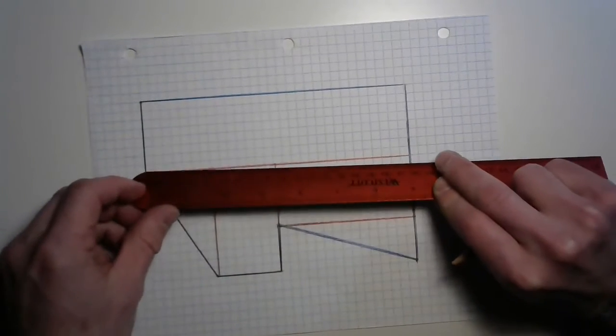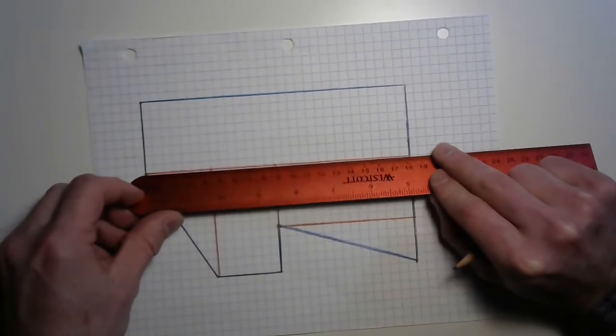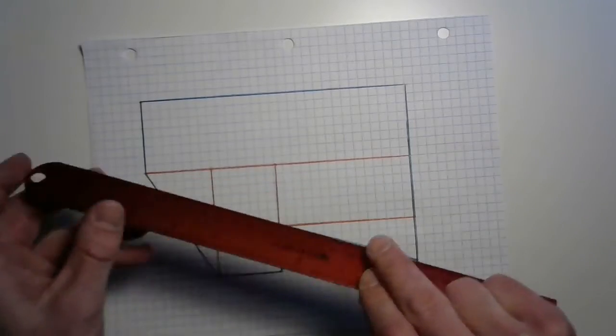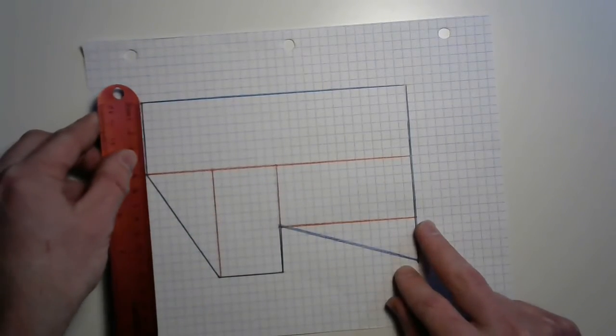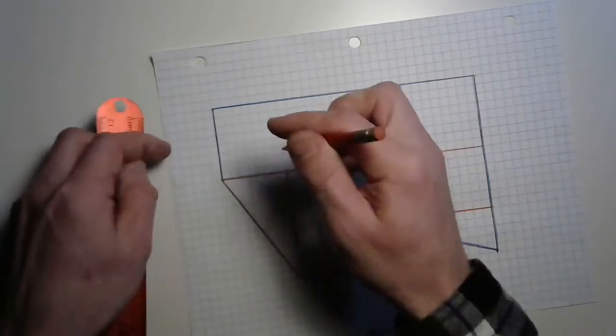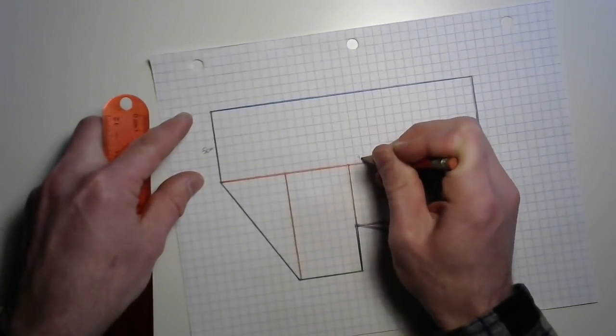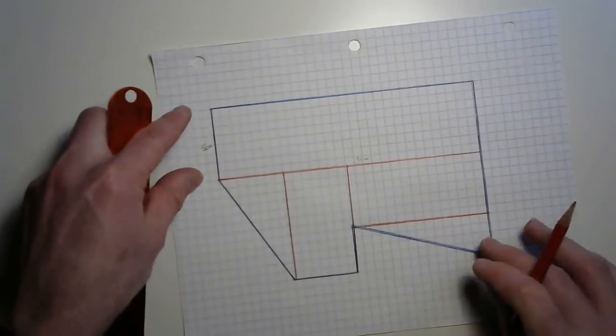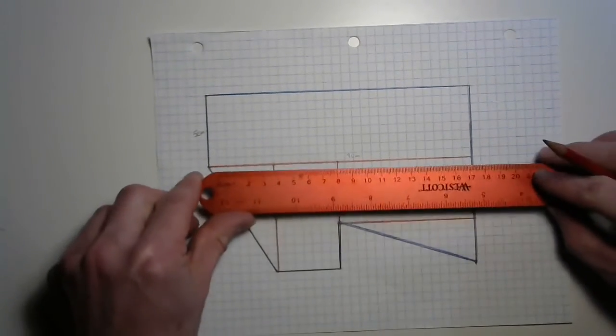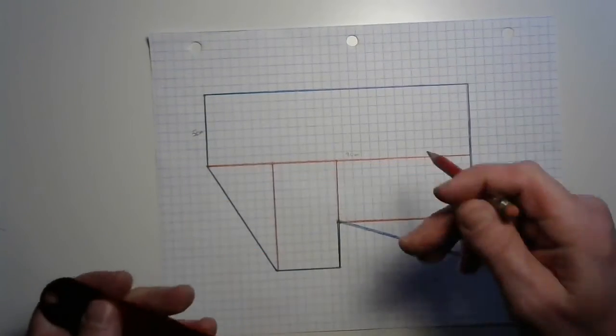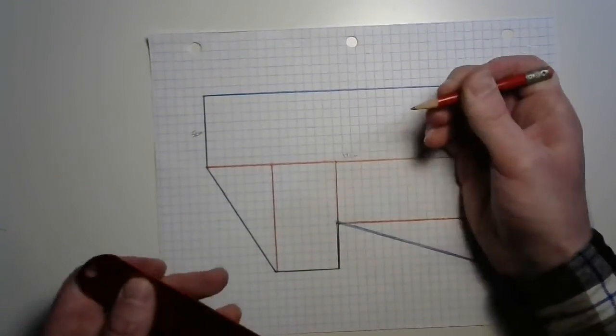Why don't we start with this big rectangle right here. Got 18 centimeters by 5 centimeters. I'm going to actually write that down. 5 centimeters and 8 centimeters. My mistake, 18 centimeters. All right.